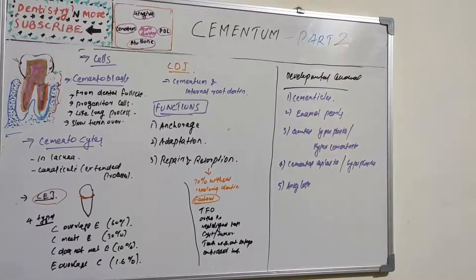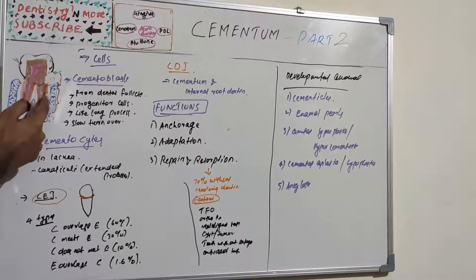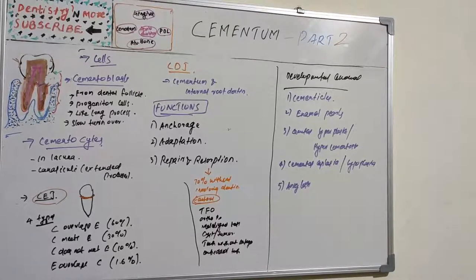A cemental tear is the detachment of a fragment of cementum. Ankylosis is the fusion of cementum and alveolar bone with obliteration of the periodontal ligament space. This results in resorption of the root and its replacement by bone tissue. This condition is uncommon, occurs in teeth without cemental resorption, and represents a form of abnormal repair.